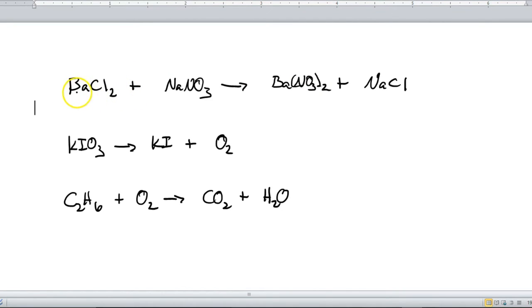Over here on the left, I've got one barium. And on the right, I've got one barium, so I don't need to do anything with that just yet. On to chlorine. I've got two chlorines here on the left and only one here on the right. So I need to fix this. Well, I can't change this formula. NaCl is what it is, I can't change that.